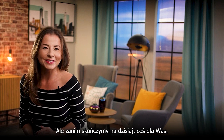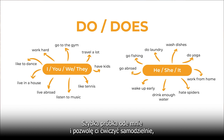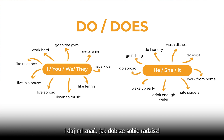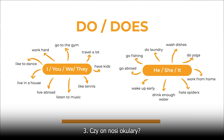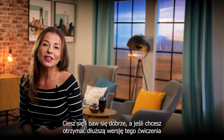But before we end for today, a little something for you. Look at the chart — how will you ask these questions? Just a quick sample from myself and I'm going to let you practice on your own. Make sure to write down some of the questions that you will create in the chat below and let me know how well you're doing. Here are some of my examples: Do you speak English? Do they eat oysters? Does he wear glasses? Does she sing well? Okay, that's me done — it's now your turn. Enjoy and have fun.